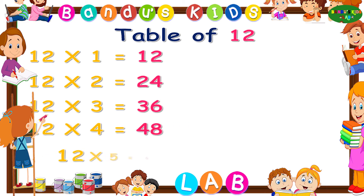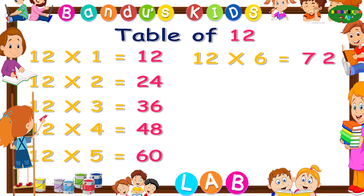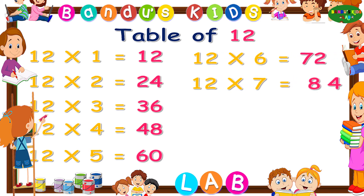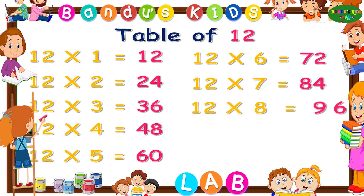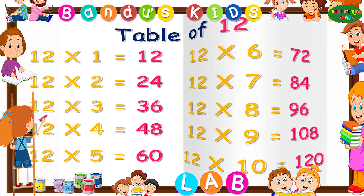Twelve fives are sixty. Twelve sixes are seventy-two. Twelve sevens are eighty-four, twelve eights are ninety-six, twelve nines are one hundred and eight, twelve tens are one hundred and twenty.